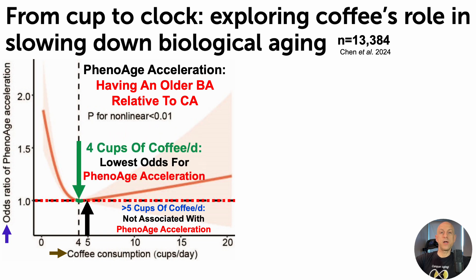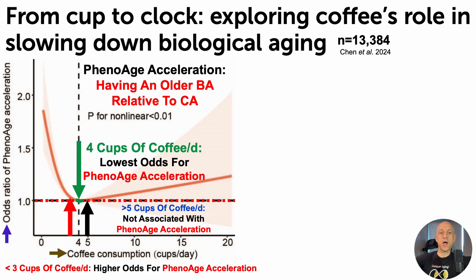The lowest odds for having phenowage acceleration was associated with 4 cups of coffee per day. And then for people who reported drinking less than 3 cups per day, that was associated with the highest odds for phenowage acceleration — in other words, having a higher biological age relative to chronological age, as shown by the increasing red lines — such that people who reported no coffee intake had about an 80% higher odds of having an older biological age relative to their chronological age.